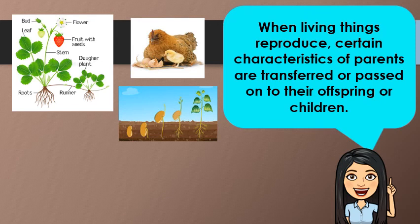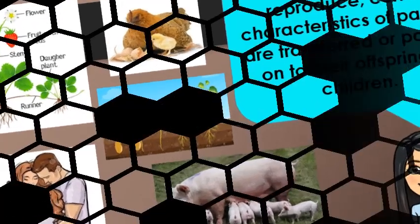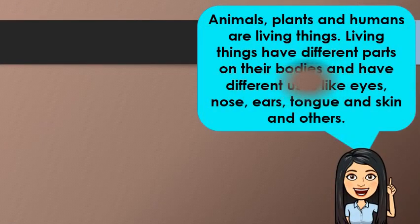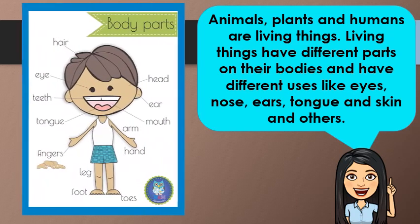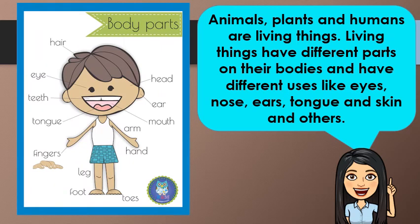When living things reproduce, certain characteristics of parents are transferred or passed on to their offspring or children. Animals, plants, and human beings are living things. Living things have different parts on their bodies with different uses, like eyes, nose, ears, tongue, and skin, and other parts of our body.